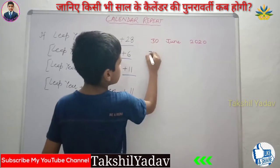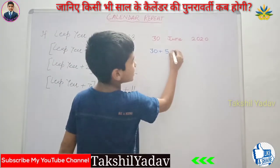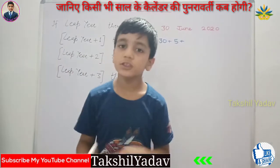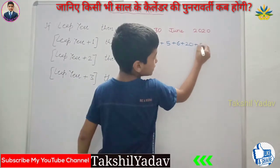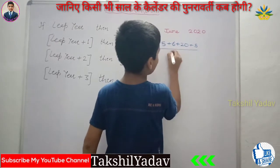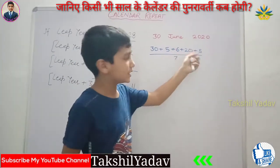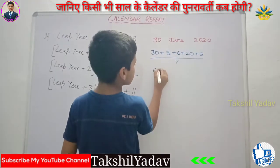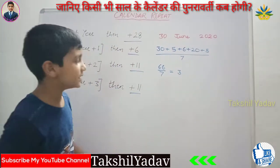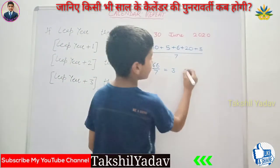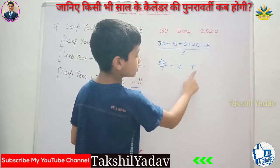To solve: 30 plus June's code (which is 5) plus 2020's code. We split 2020 into 2000 plus 20. The year 2000's code is 6. So we have 6 plus 20 plus 5 (since 20 divided by 4 gives 5), all added to 30, all divided by 7. That gives us 30 plus 20 is 50, plus 10 is 60, plus 6 is 66. 66 divided by 7 gives a remainder of 3, and 3 represents Tuesday. So the answer is Tuesday.